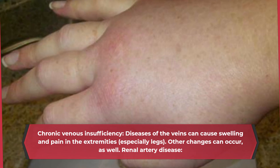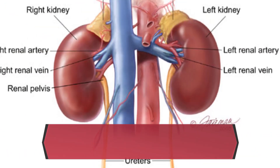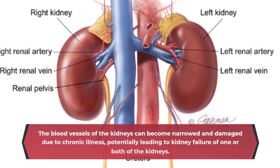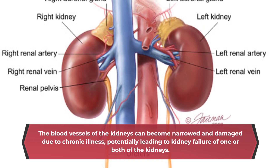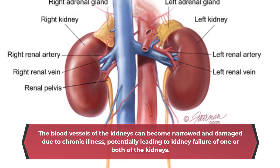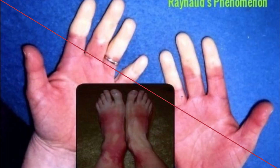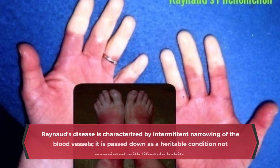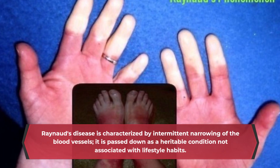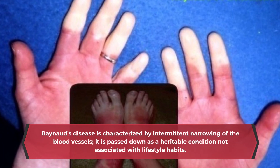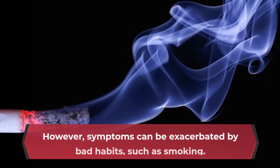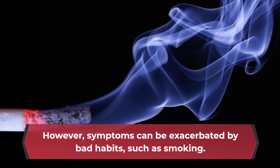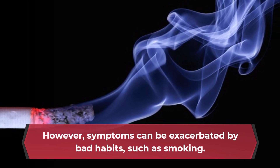Renal artery disease: The blood vessels of the kidneys can become narrowed and damaged due to chronic illness, potentially leading to kidney failure of one or both kidneys. Renal artery disease is characterized by intermittent narrowing of the blood vessels. It is passed down as a heritable condition not associated with lifestyle habits; however, symptoms can be exacerbated by bad habits such as smoking.